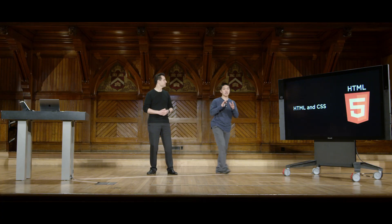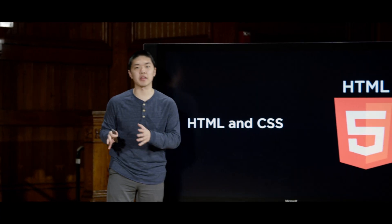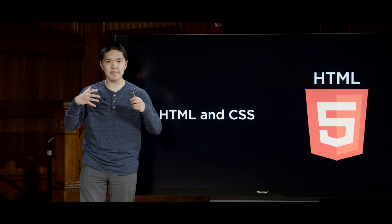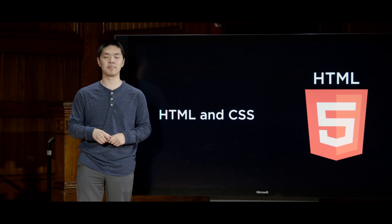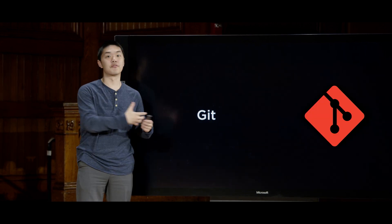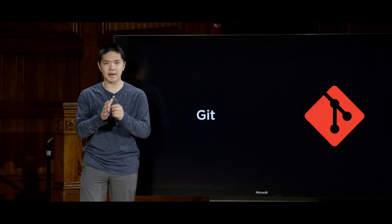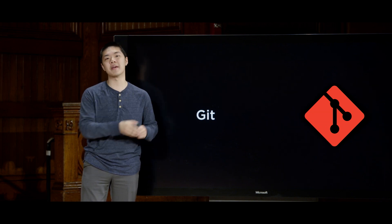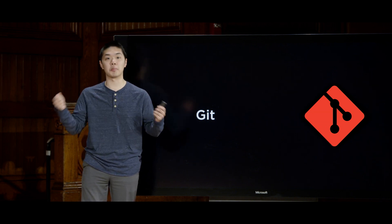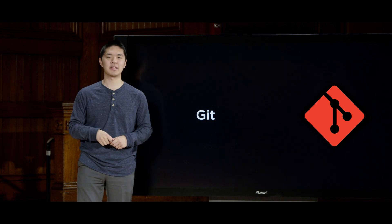We'll start by taking a closer look at HTML and CSS, languages that we can use to describe the structure and the style of web pages. After that, we'll introduce Git, a version control tool that we can use to keep track of changes we make to our code, and also to allow multiple people to collaborate on the same project at the same time.